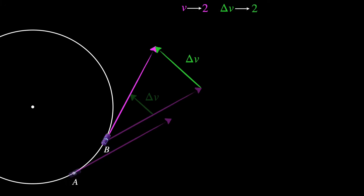At this point, we might say the acceleration must also be double, right? Well, remember, acceleration is not just change in velocity — it's change in velocity divided by the time taken for that change. It's a measure of how quickly the velocity is changing. Which means we also have to look at the time taken for the car to go from A to B. So what happens to the time taken when we double the speed of the car?